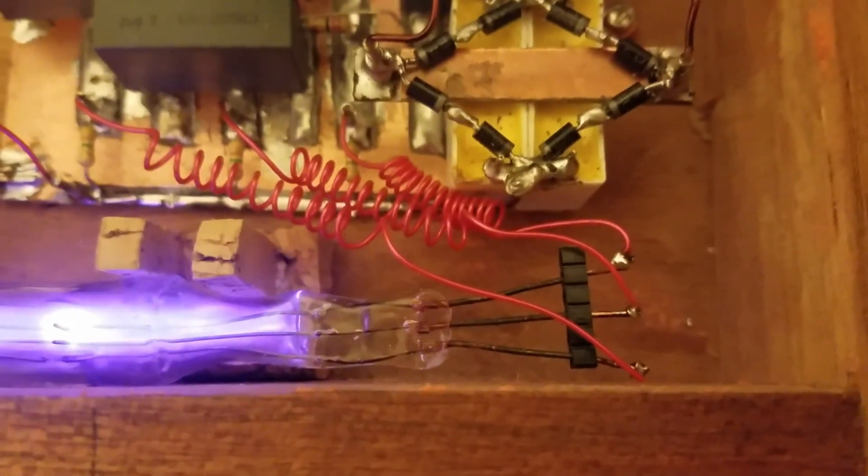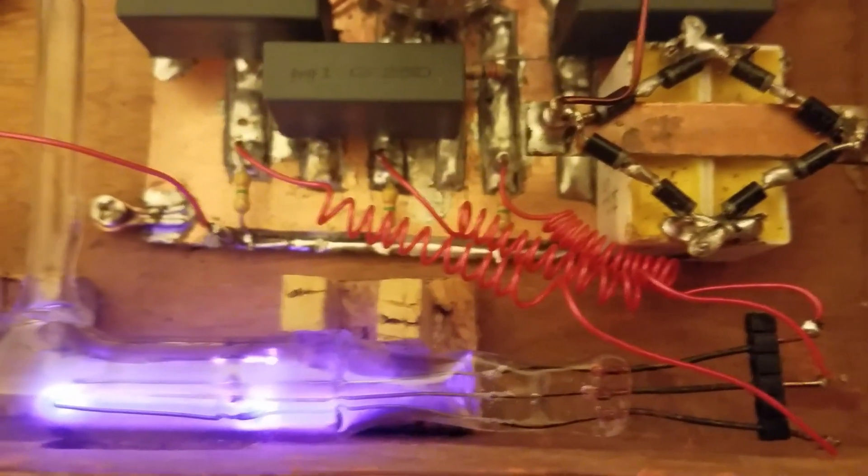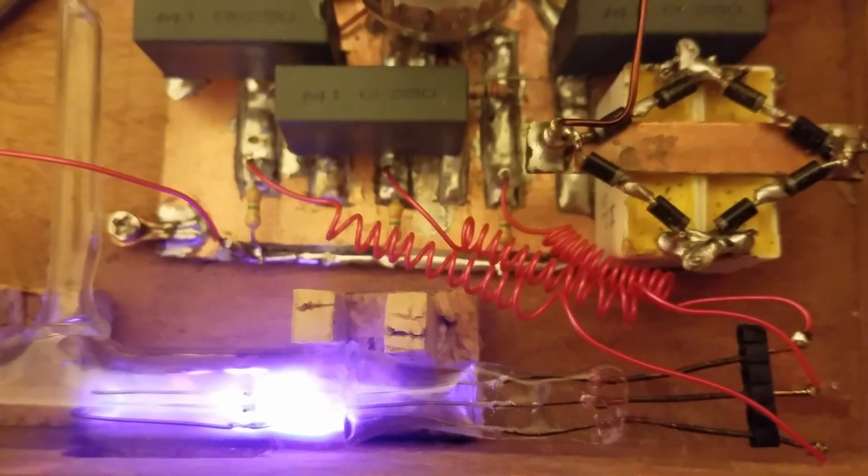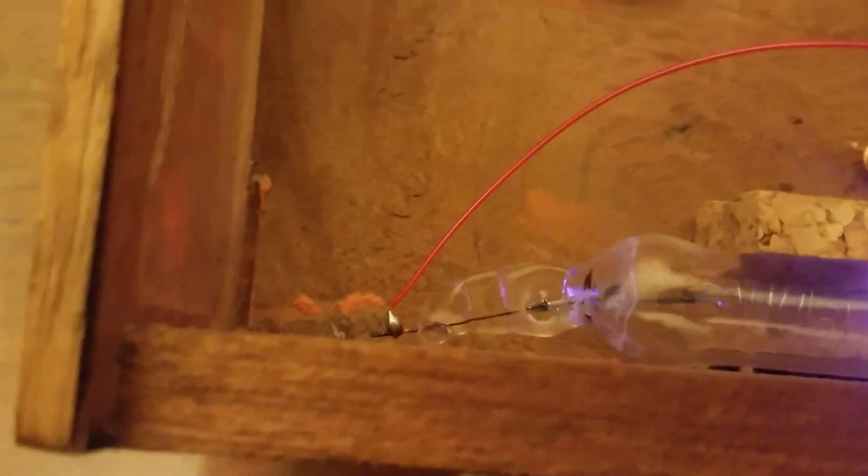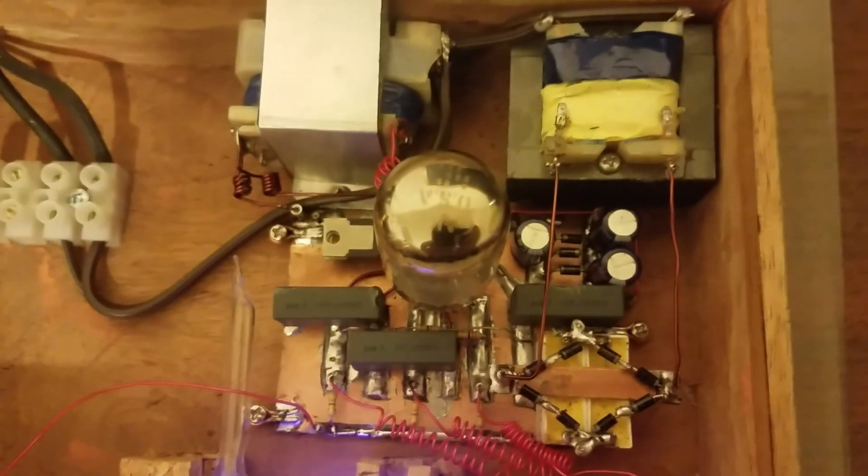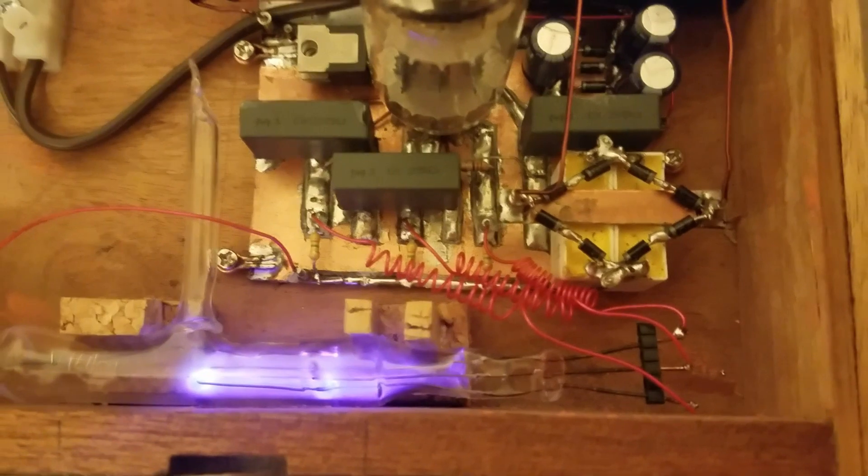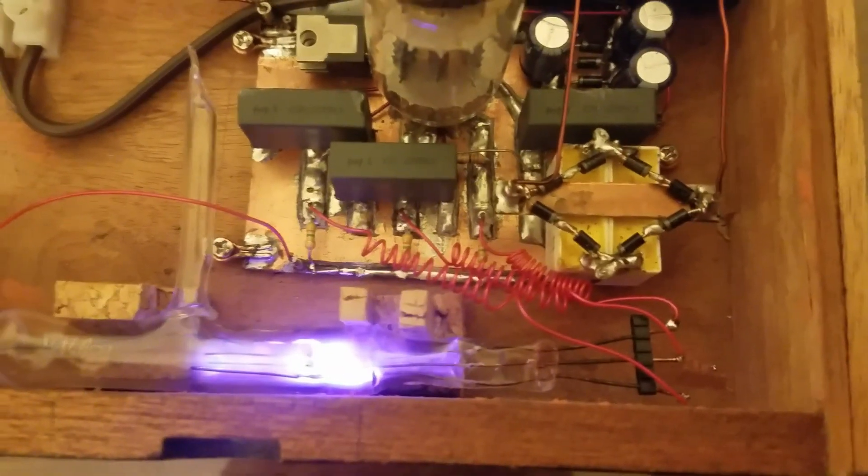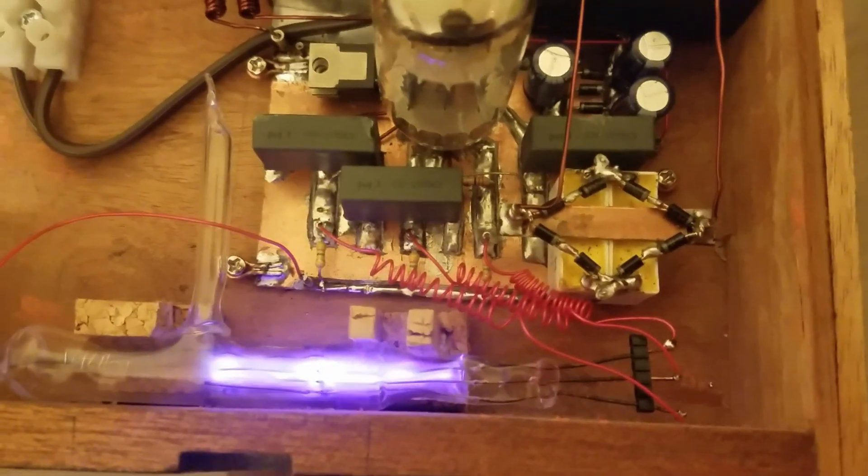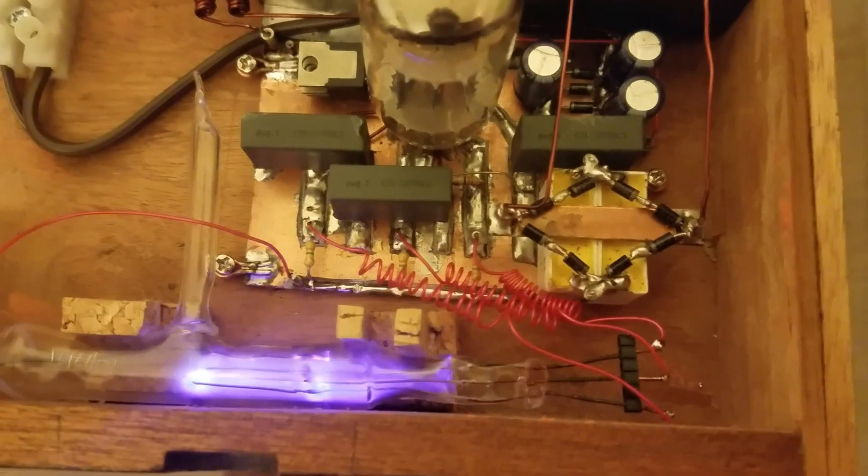I just have these curled up wires right there to take any stress or strain off the leads as much as possible. Because if you break those off, the tube is pretty much dead. So that's pretty much it for the inside. I think I'll go to the schematic now and go into more detail how this works.